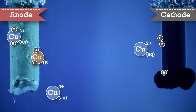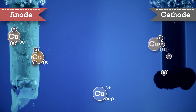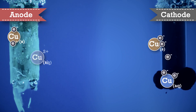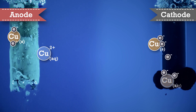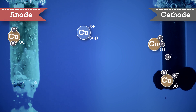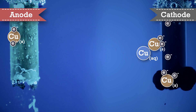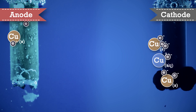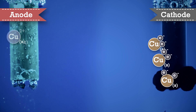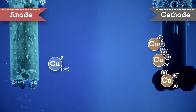Now let's take a look at the molecular level. At the anode, electrons are being pulled, so the copper-zero metal is forced to oxidize into copper-2. These ions travel in solution to the cathode, where they are reduced into copper-zero metal. This is the electrolytic cell.